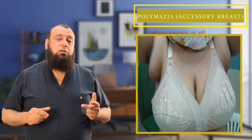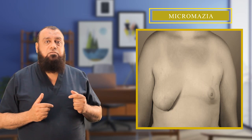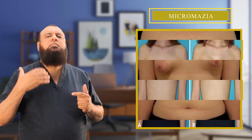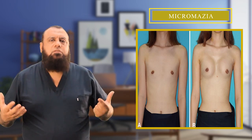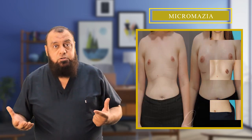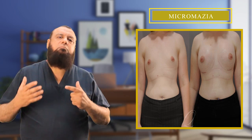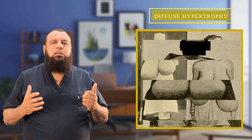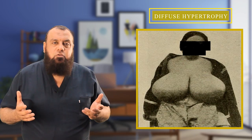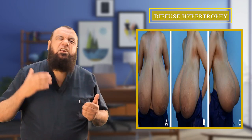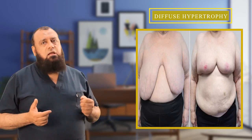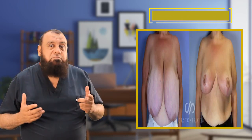The third anomaly is micromasia, or underdeveloped breast, treated by augmentation mammoplasty such as silicone implants or natural augmentation surgery. The fourth anomaly is diffuse or virginal hypertrophy of the breast — gigantism of the breast with huge enlargement — and the treatment is reduction mammoplasty.